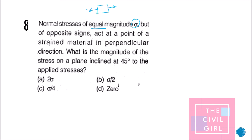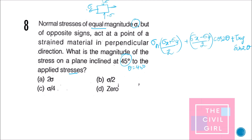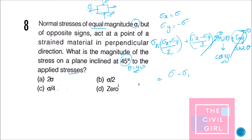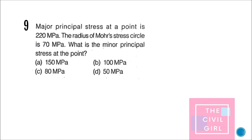Next question: normal stresses of equal magnitude sigma but opposite signs act at a point in perpendicular directions (so sigma x = +sigma, sigma y = −sigma). What is the magnitude of the stress on a plane inclined at theta = 45°? Using the formula sigma_n = (sigma x + sigma y)/2 + (sigma x − sigma y)/2 · cos(2θ), with no shear stress and theta = 45°: cos 90° = 0, and (sigma − sigma)/2 = 0, so sigma_n = 0. The answer is option D.